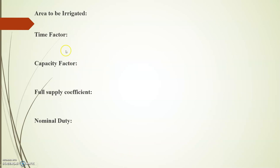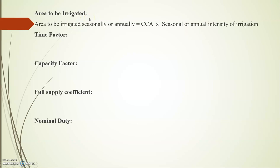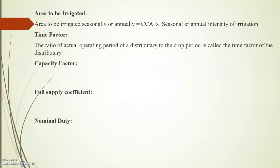There are five additional terms: area to be irrigated, time factor, capacity factor, full supply coefficient, and nominal duty. Understanding these clearly will allow us to solve complex problems. Area to be irrigated seasonally or annually equals CCA multiplied by the seasonal or annual intensity of irrigation. Time factor is the ratio of the actual operating period of a distributary to the crop period.